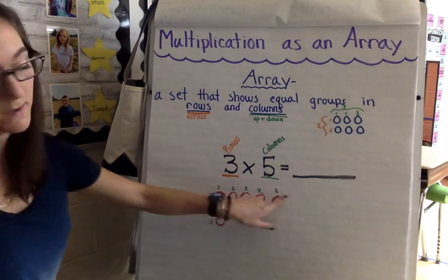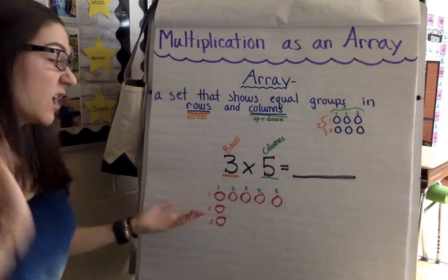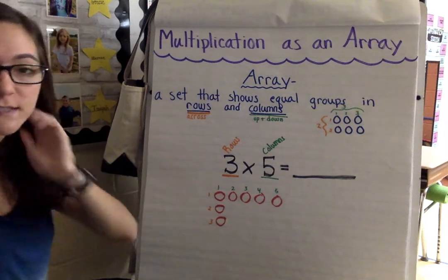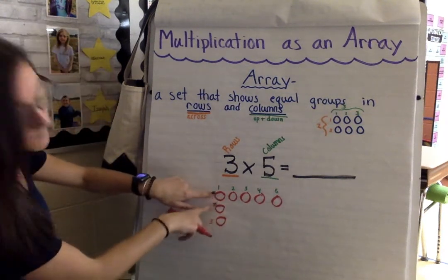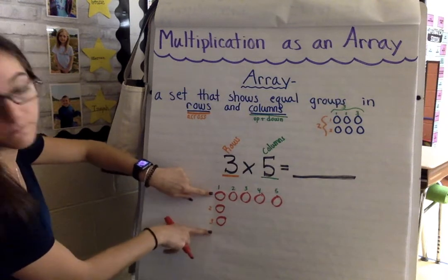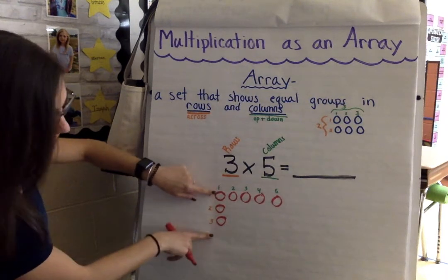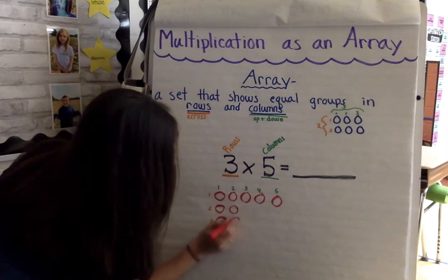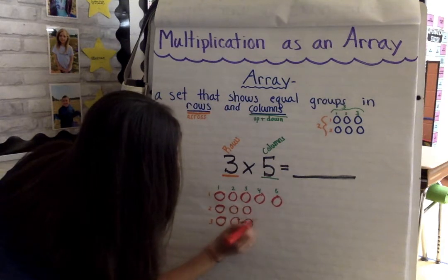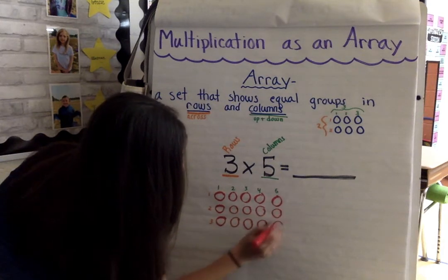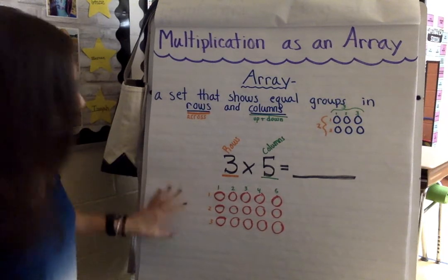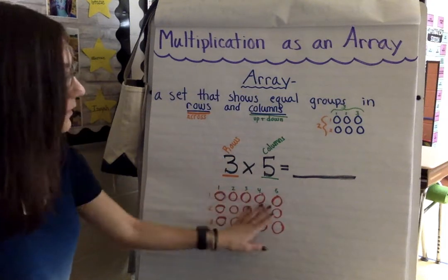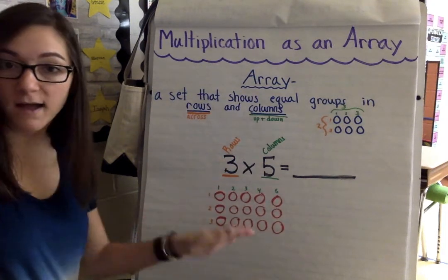My three rows and my five columns — but this is not a complete array. Now that I have my rows and my columns built, I'm just going to fill in the rest of my array. I have three rows, so I need to make sure every column has three rows. So now I have a complete array that has three rows with five columns, or three rows with five in each column.